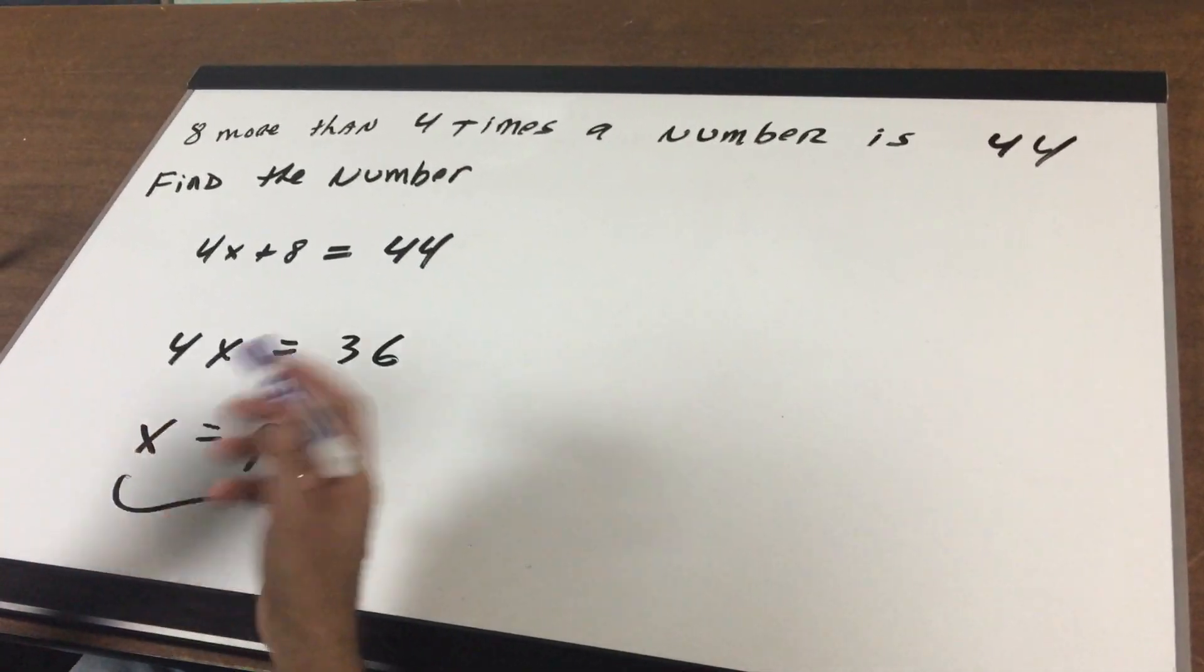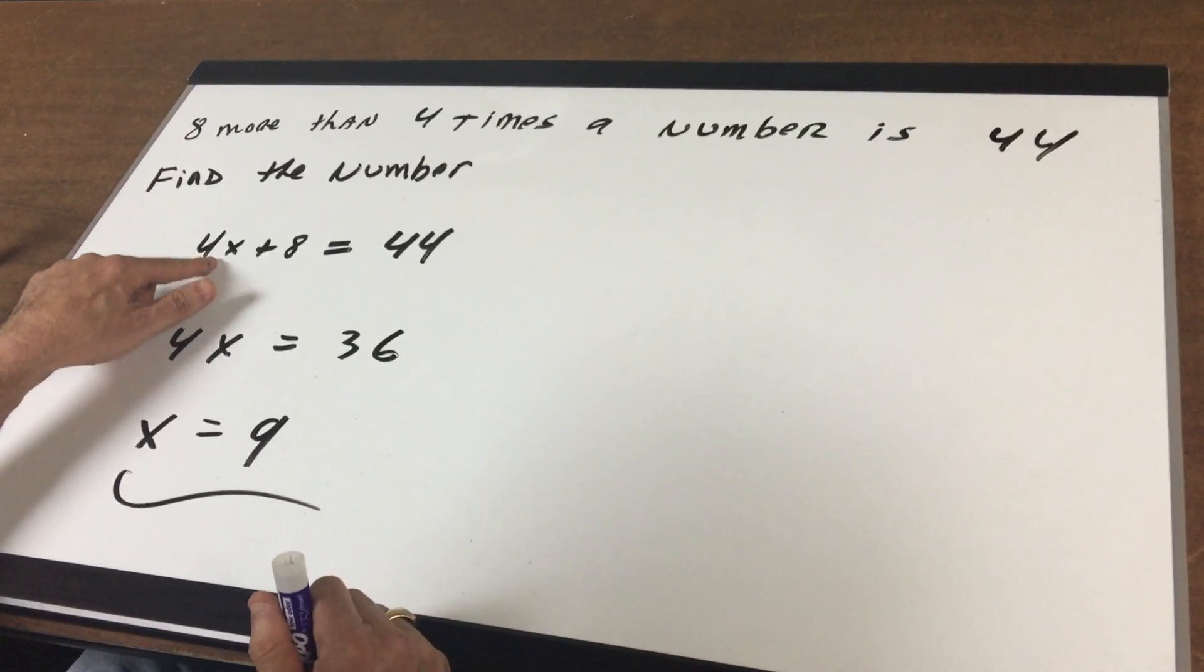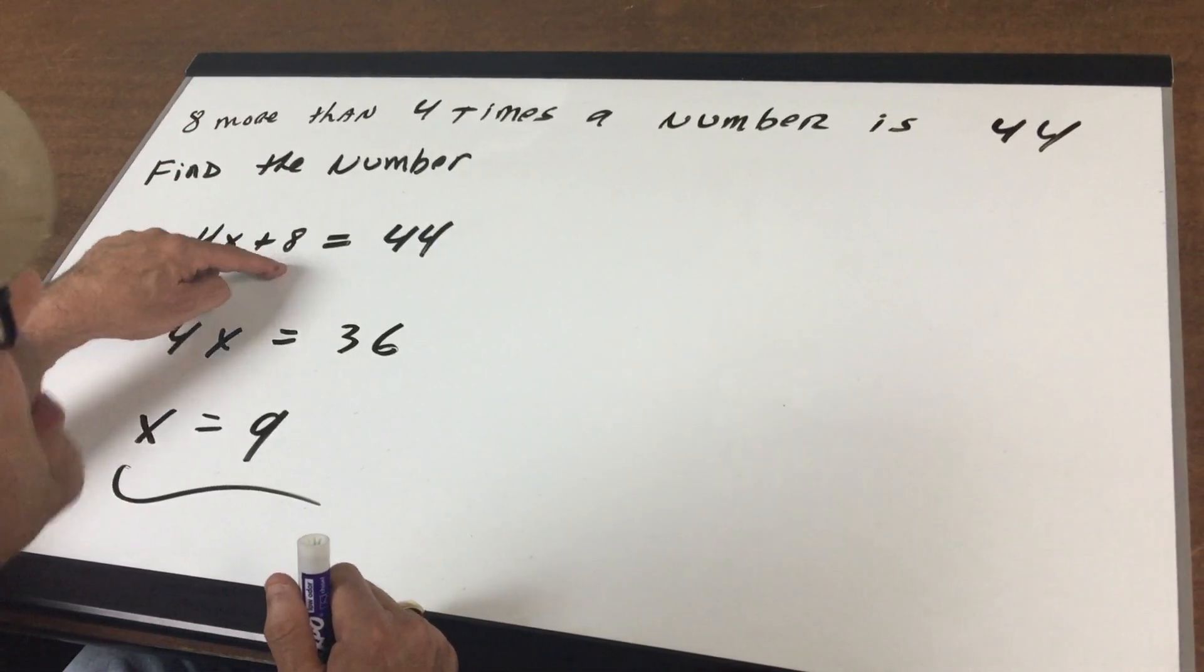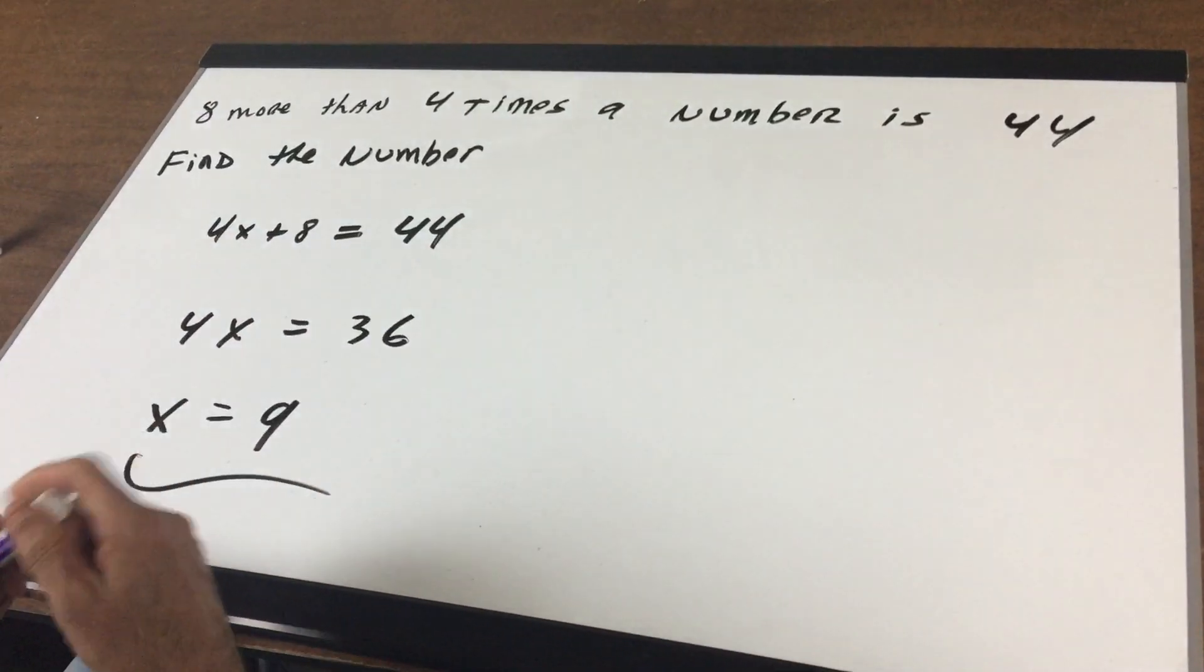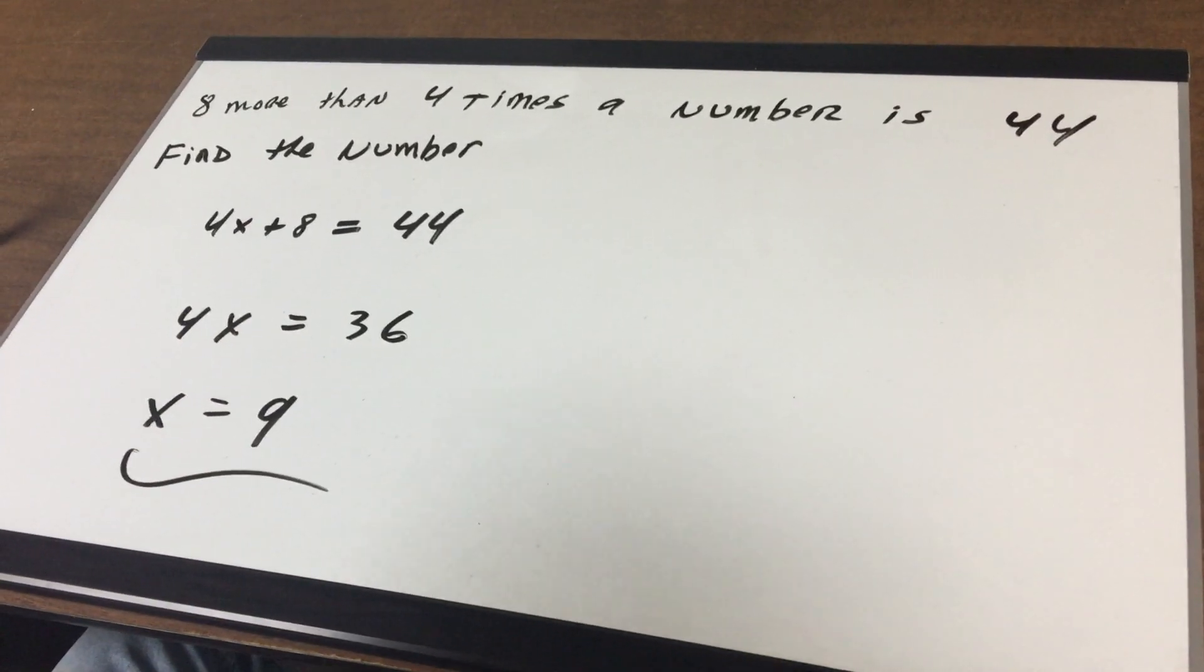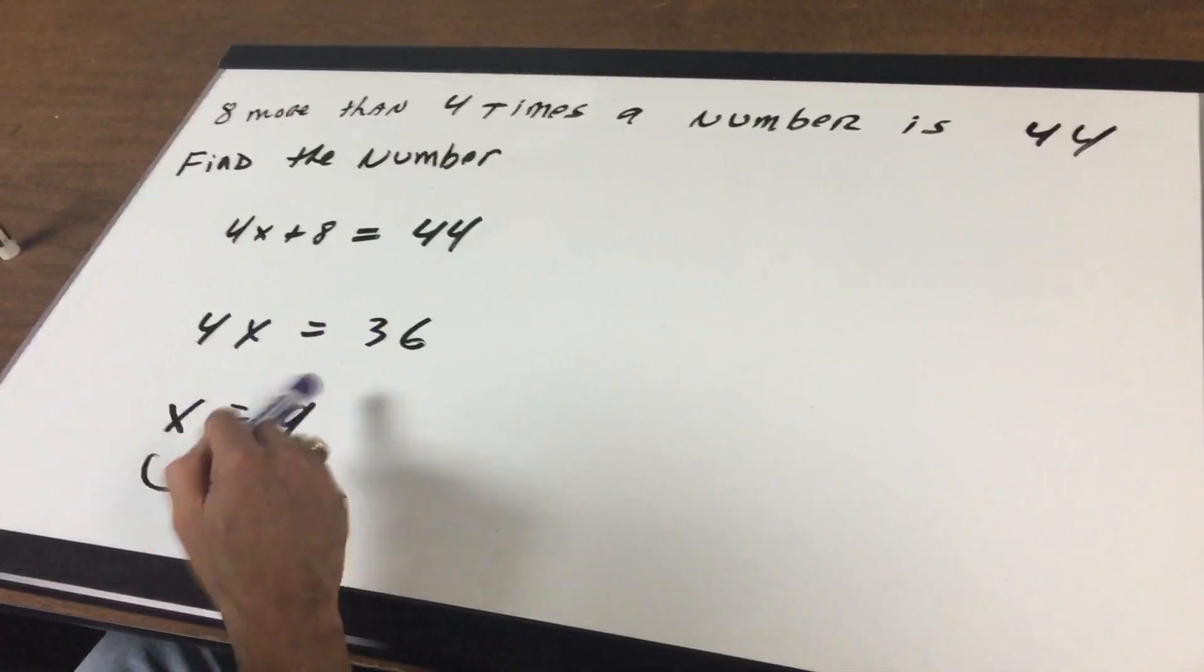So what I do is we don't know what the number is so I'll call it X. So four times this number X and then it says there's eight more so plus eight equals 44. So I'm going to get 4X + 8 = 44, subtracting eight from both sides, dividing by four and I get X = 9.